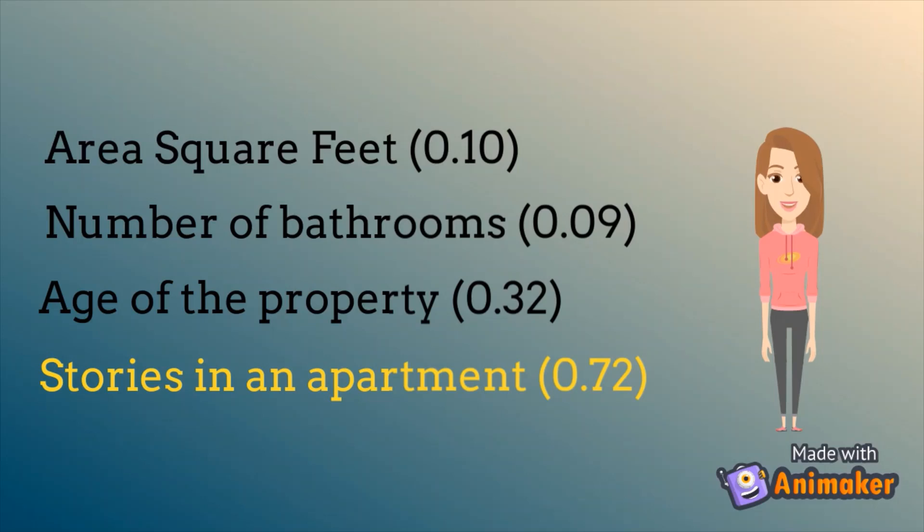By excluding insignificant variables, we can improve the model. Let's remove stories in an apartment variable, which has the highest p-value.